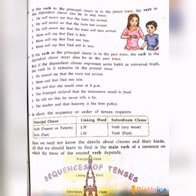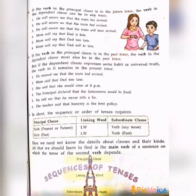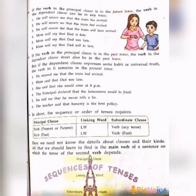Rule three: if the verb in the principal clause is in the past tense, the verb in the dependent clause must also be in the past tense. Unlike rules one and two, where the dependent clause could be any tense, here it must be past. Examples: 'He assured me that the train had arrived' — both past. 'Mum said that dad was late' — both past. 'She said that she would come' — both past forms.